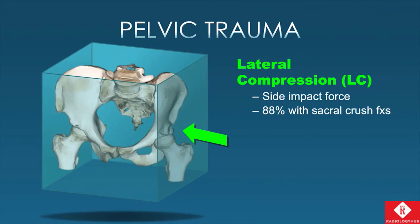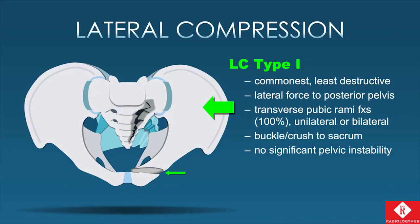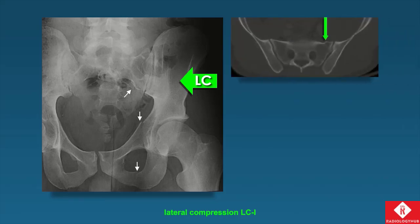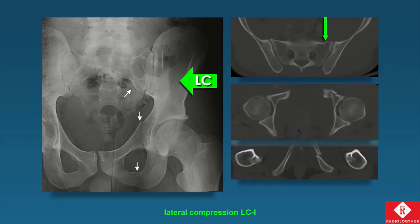Now we'll move to lateral compression — a side impact force. The vast majority of these patients will have a crush injury to their sacrum, which is going to separate this injury and make it easier to distinguish from anterior-posterior compression. The type 1 fracture is the most common and least destructive. We have a lateral force centered over the posterior pelvis, typically producing a transverse fracture involving the pubic rami — unilateral or bilateral but most commonly unilateral — and a crush injury to the ipsilateral sacrum, but no real instability. On CT you see this little buckle fracture of the sacrum — look very closely, it can be very subtle.